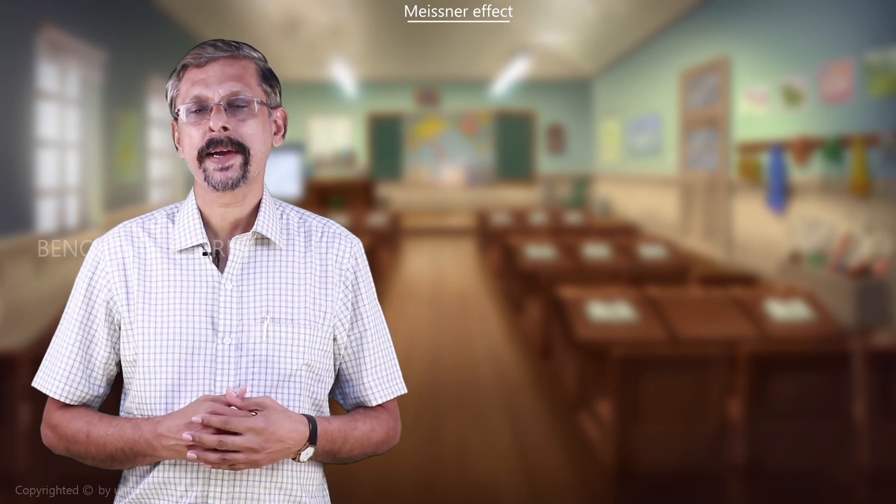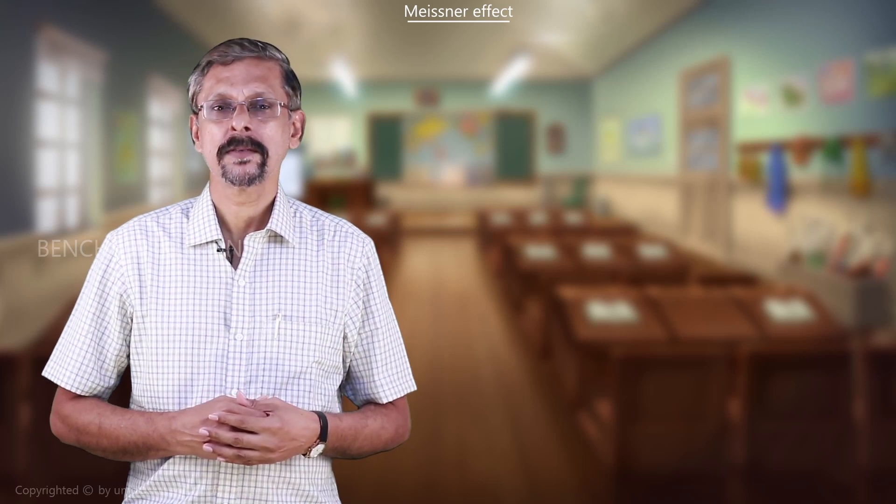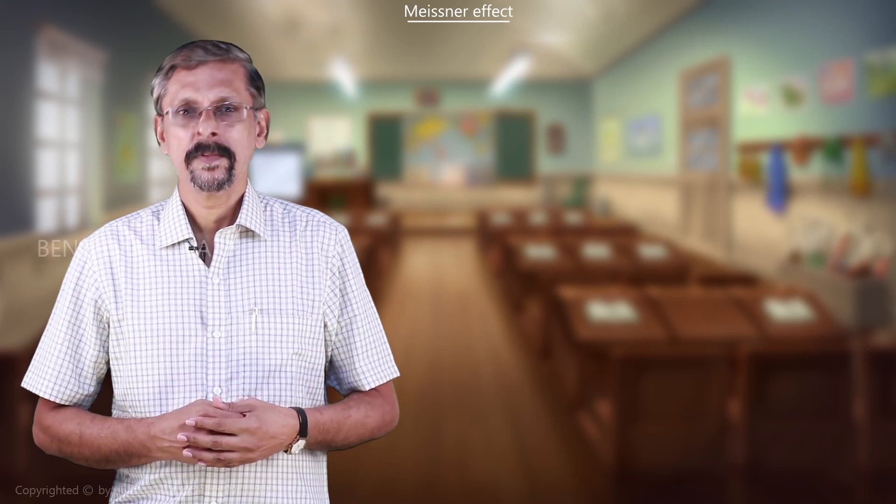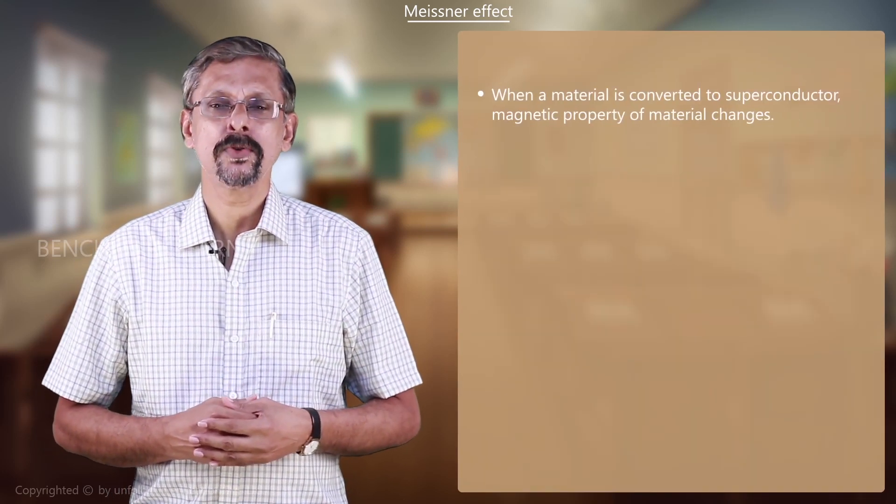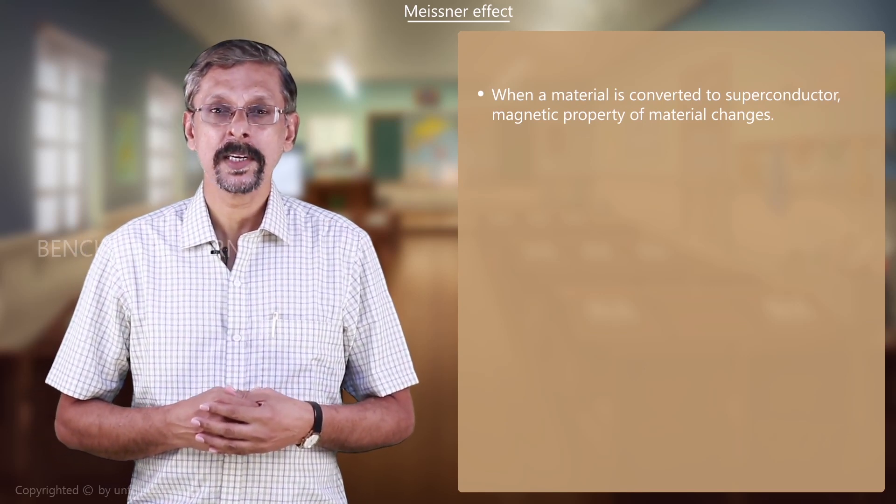Now it is about a magnetic property of a superconductor known as the Meissner effect. When a material is converted into a superconductor, the magnetic property of the material changes.